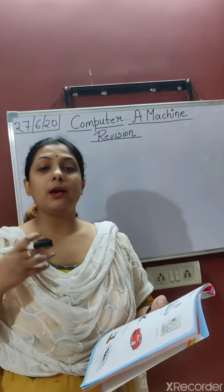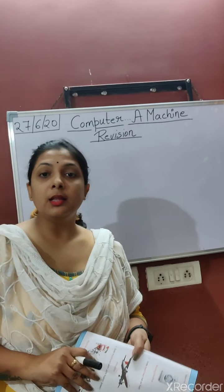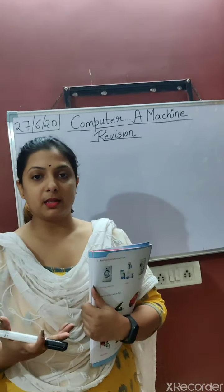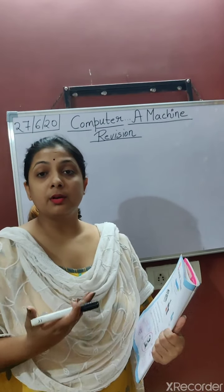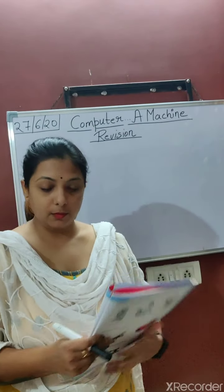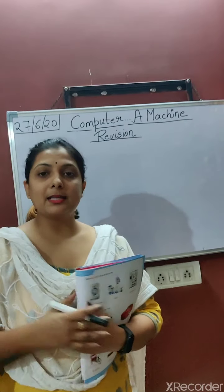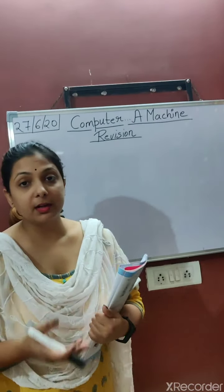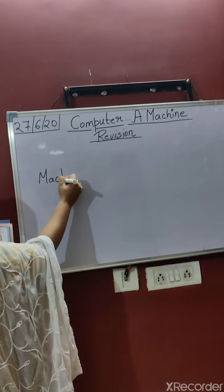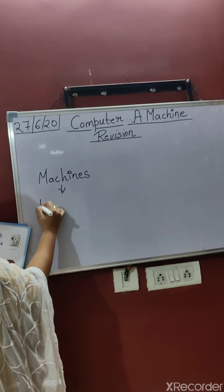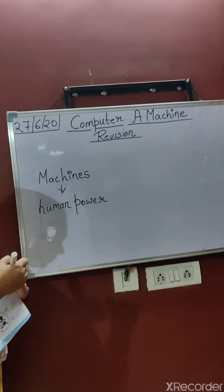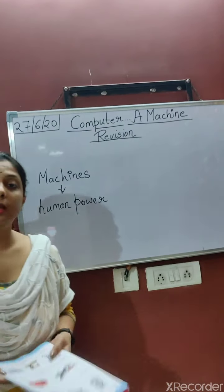Why are these called machines? Because they work. There are many different types of machines. Some machines run on fuel, some run on electricity, and some work with human power — we will discuss these. Machines are man-made things, meaning they are developed by humans themselves, and they help us do different types of work.